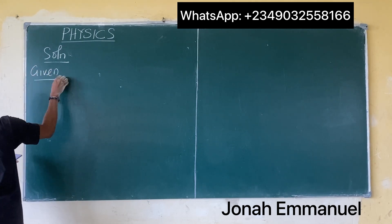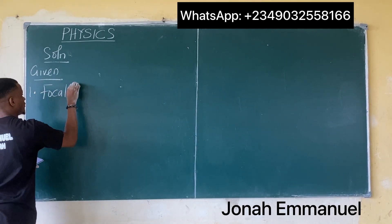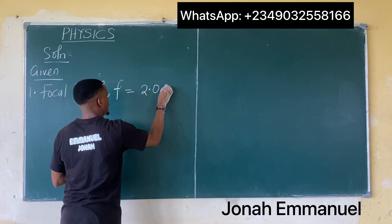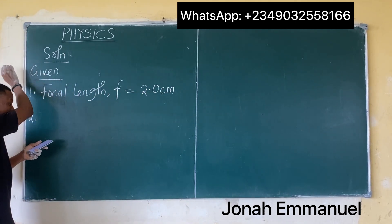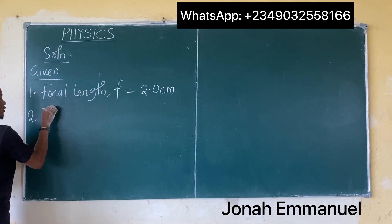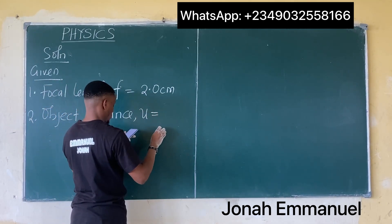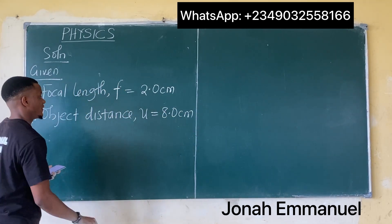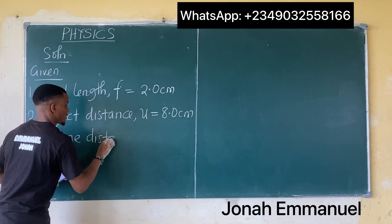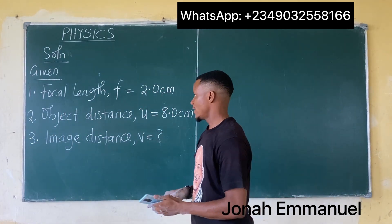Let's list our given parameters. Number one, the focal length of a concave mirror: focal length f is equal to 2.0 cm. Number two, the object is placed 8.0 cm away, so the object distance u is equal to 8.0 cm. Finally, the image distance v is what we need to find.